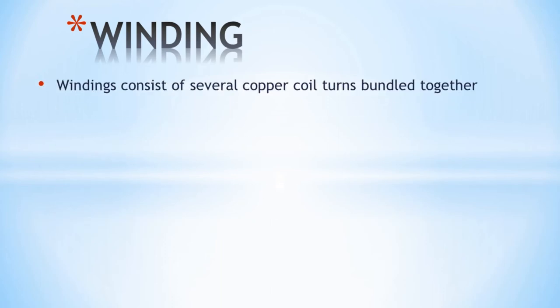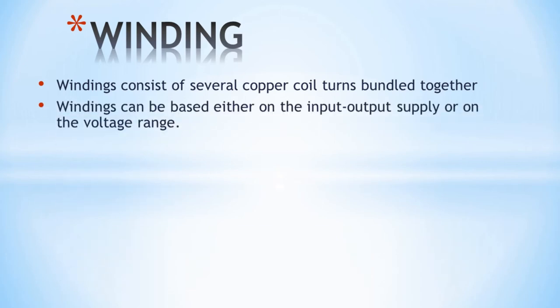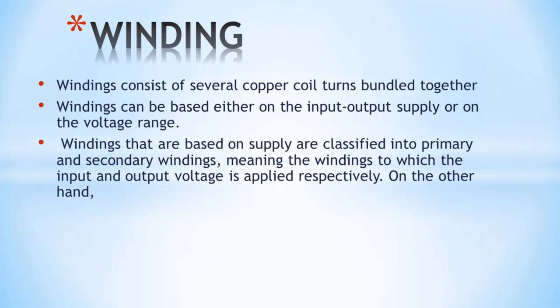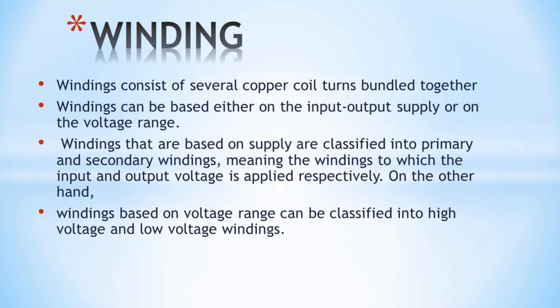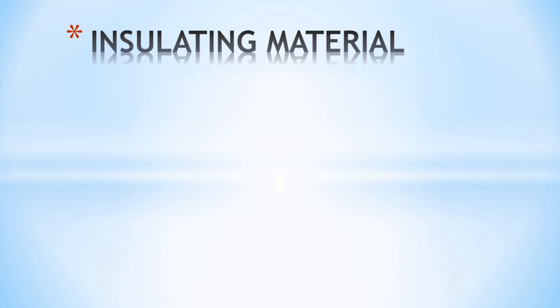The next part is the winding. The winding is made of copper coil, wound into a bundle. It carries the input supply and includes the primary winding and secondary winding, handling input voltage and secondary voltage respectively.